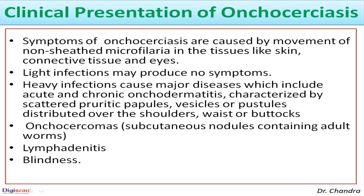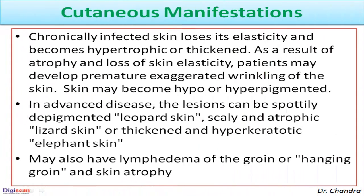Looking at the cutaneous manifestations of onchocerciasis: chronically infected skin loses its elasticity and becomes hypertrophic or thickened. As a result of atrophy and loss of skin elasticity, patients may develop premature exaggerated wrinkling. Skin may become hypo- or hyperpigmented. In advanced disease, lesions can be spotty and depigmented, giving the appearance of leopard skin; or scaly and atrophic, similar to lizard skin; or thickened and hyperkeratotic, resembling elephant-like skin.